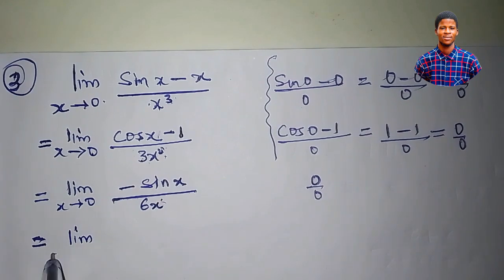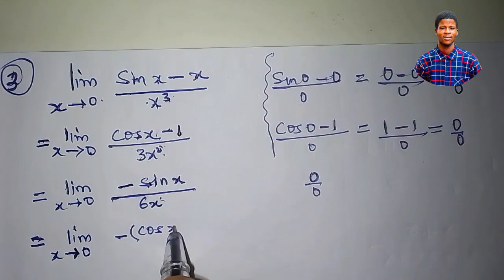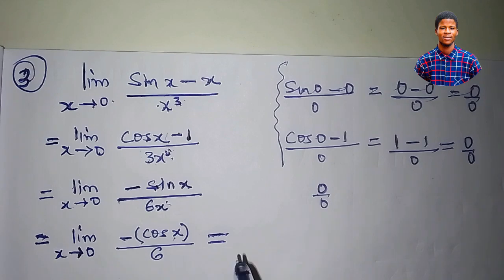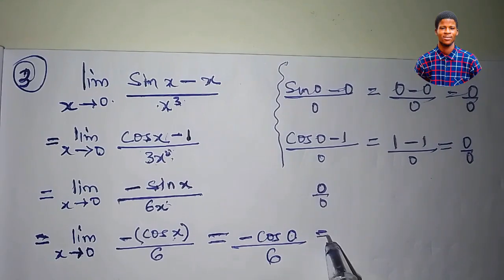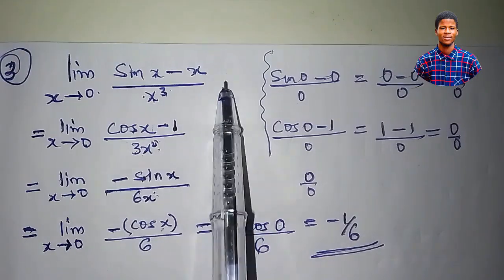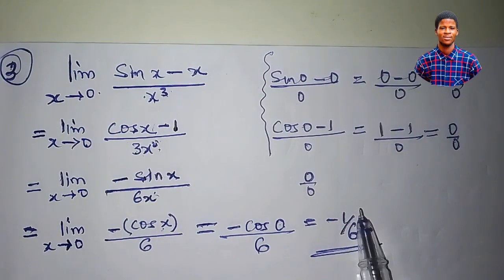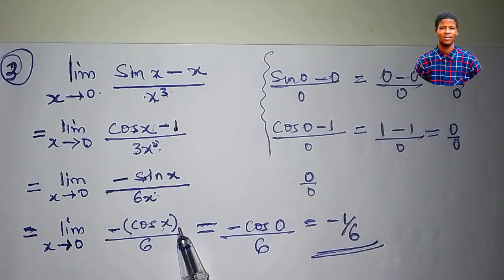We have the limit as x approaches 0. Differentiate minus sine x — the minus is a constant — to get minus cos x. Differentiate 6x to get 6. Plugging in 0 gives minus cos 0 over 6, and cos 0 is 1, so this equals minus 1 over 6. That means this function approaches minus 1 over 6 as x approaches 0. We applied L'Hôpital's rule 3 times before getting the limit.